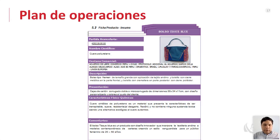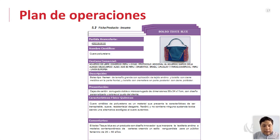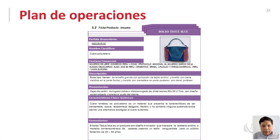La ficha de producto para el bolso incluye: parte arancelaria, nombre del material (cuero, poliuretano), ventana comercial (todo el año según demanda). Descripción: una bolsa tipo tote de tamaño grande, con aplicación de tejido andino y bolsillo con cierre metálico en la parte frontal. Presentación: en caja de cartón corrugado doble o microcorrugado de dimensiones 30x34x11 centímetros, con diseño personalizado y colores al gusto del cliente. Características: cuero sintético de poliuretano, transpirable, suave, resistente al desgarro y flexión, sin sustancias tóxicas.